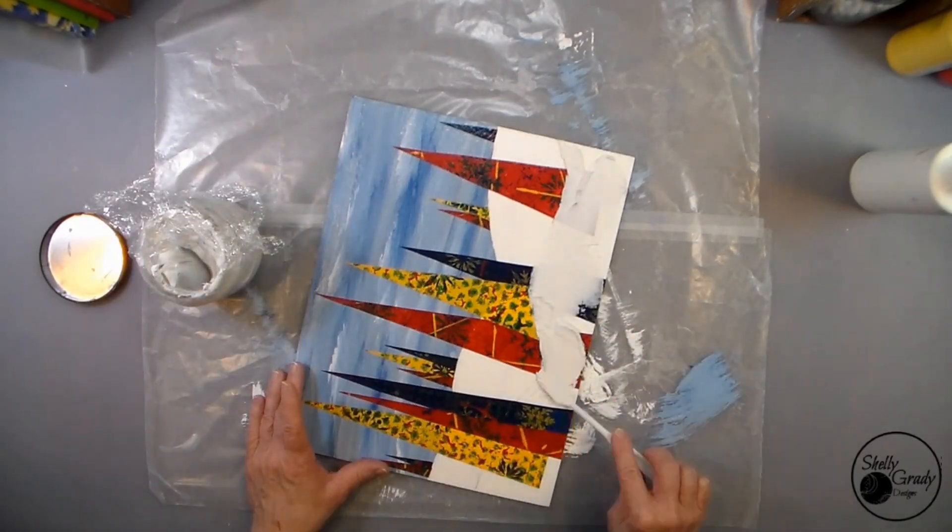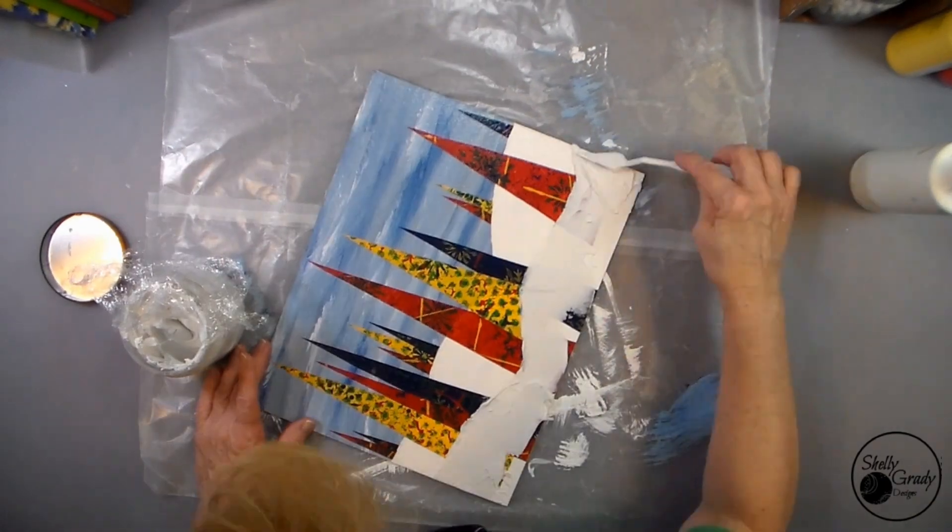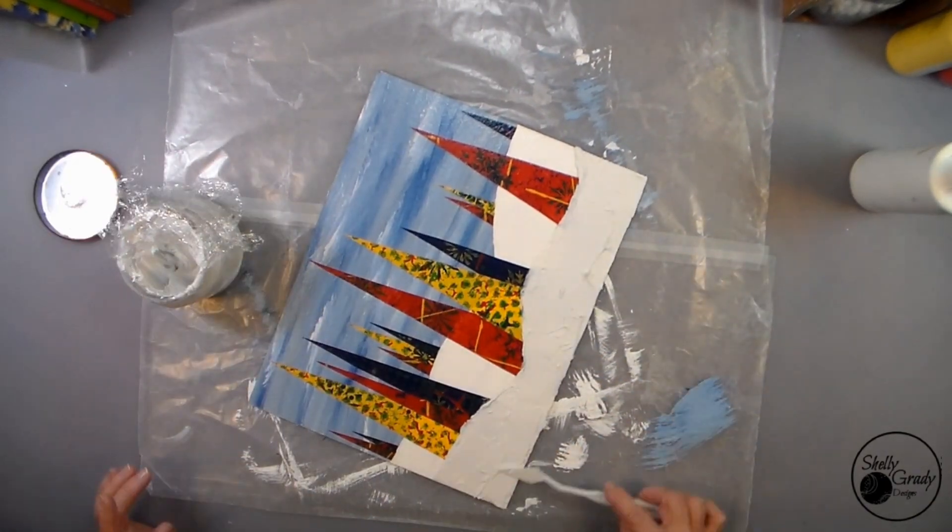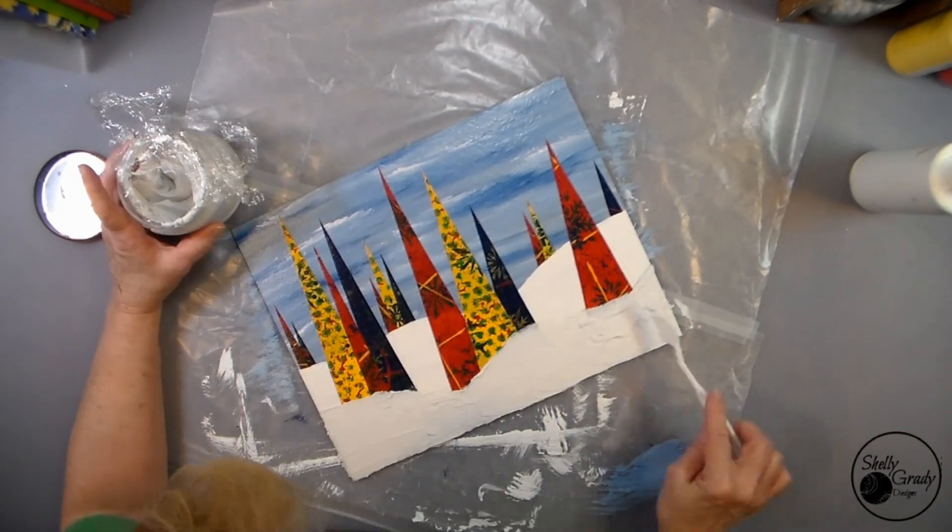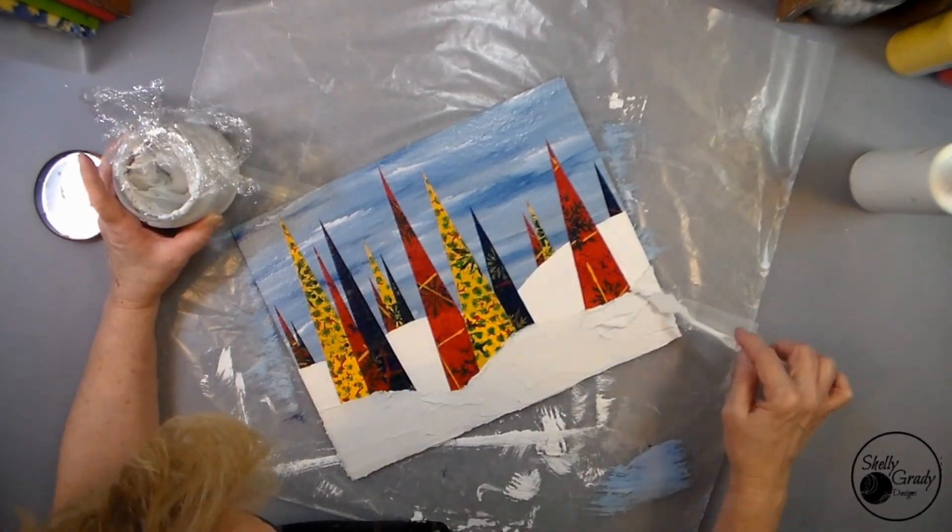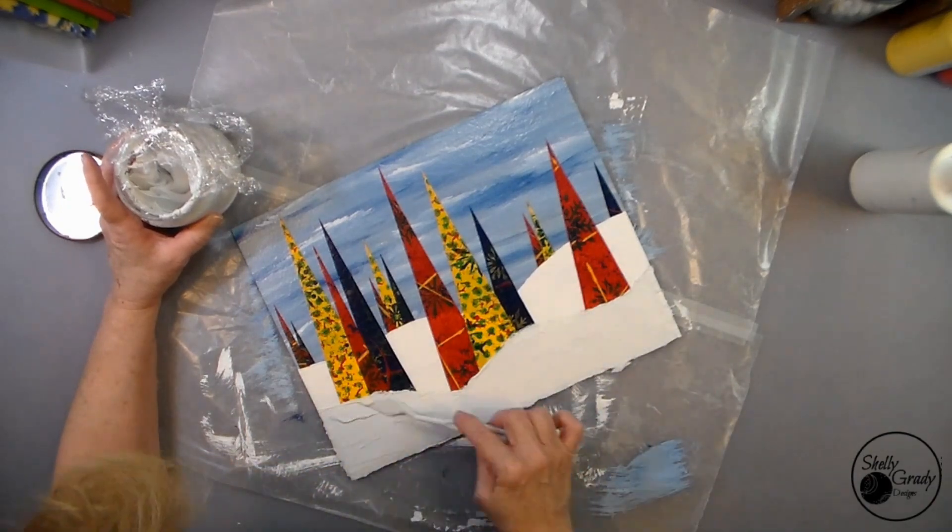Once my canvas is dry, I use my second mask to mark out my lower hills. And then now I'm going to apply a nice layer of modeling paste.